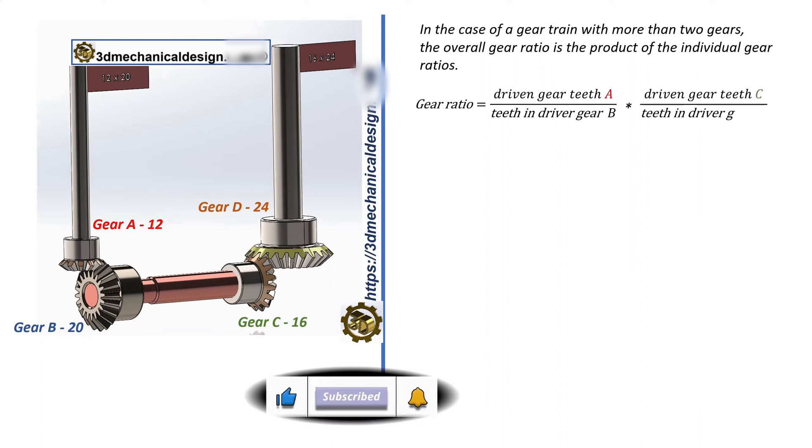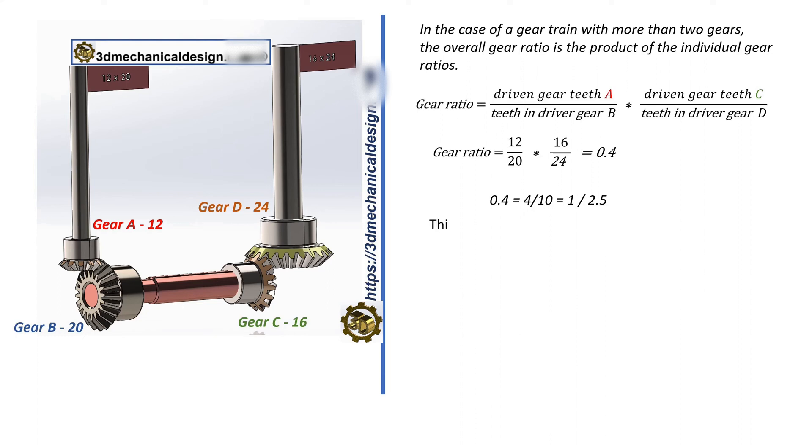Gear ratio equals 12 divided by 20 times 16 divided by 24 equals 0.4. 0.4 equals 4 divided by 10 equals 1 divided by 2.5. This means that for two and a half revolutions of the drive gear, the driven gear will make one revolution.